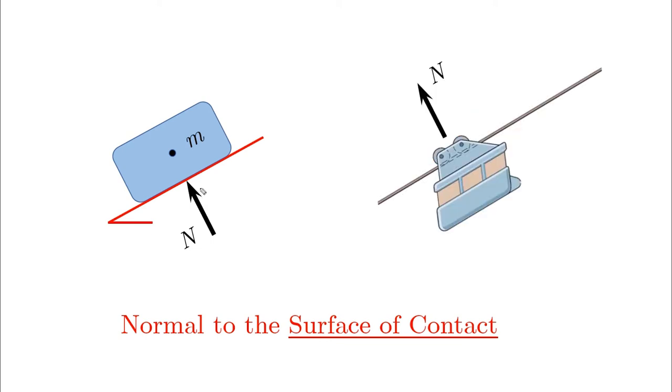You can think of it physically as the force which is preventing those masses from falling down. Does it matter if we assume the normal force in its correct direction from the beginning?